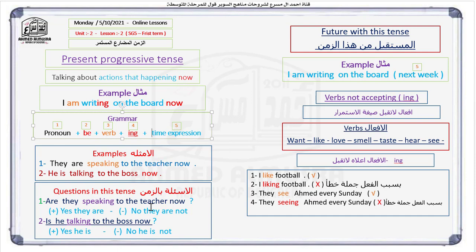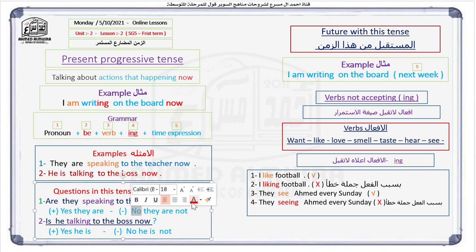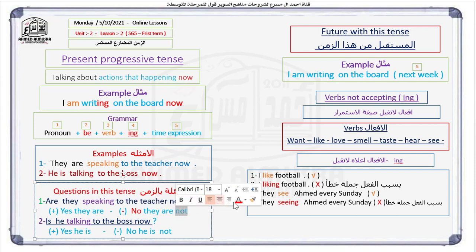If I want to change those sentences into questions, I just swap the pronoun and the be verb. So it becomes: 'Are they speaking to the teacher now?' The short answers are: Yes, they are. No, they aren't. Pay attention — the negative form is marked here.